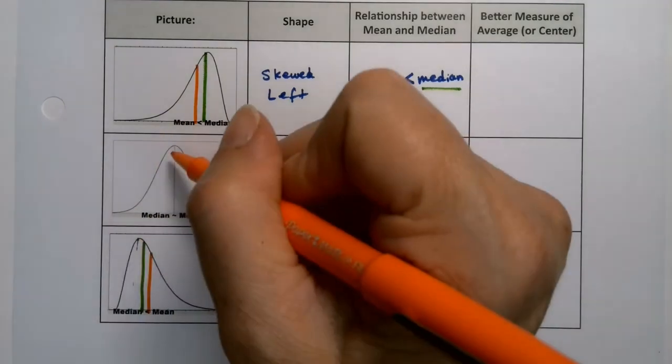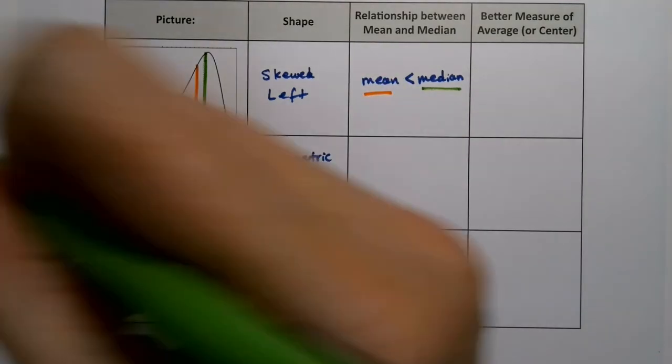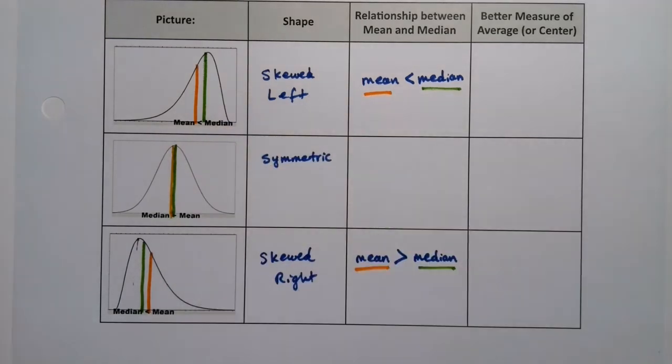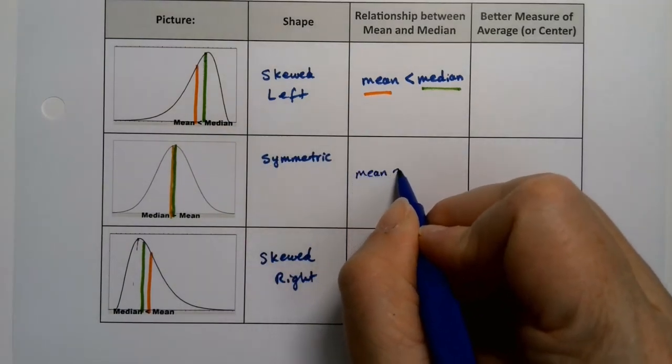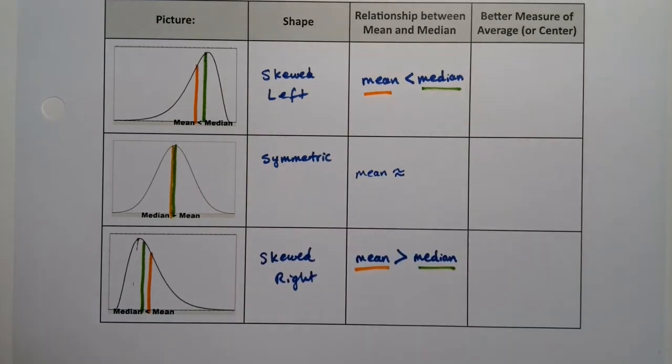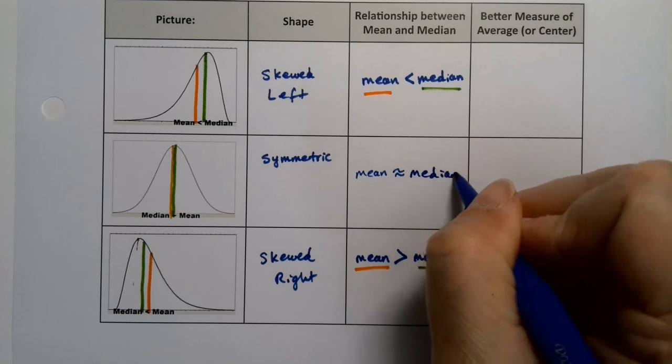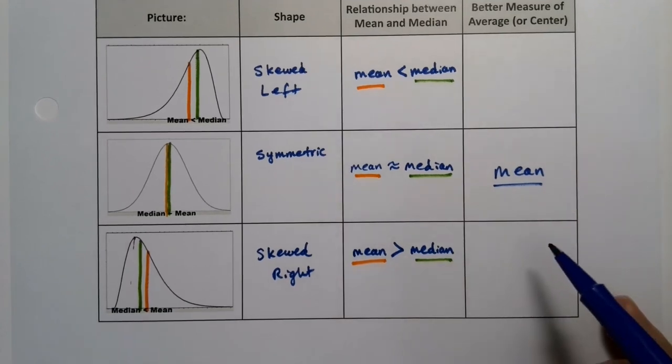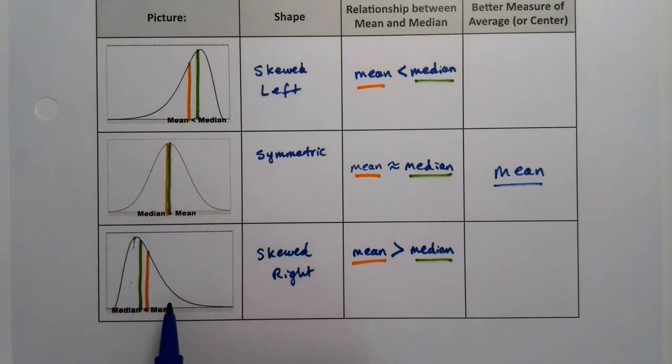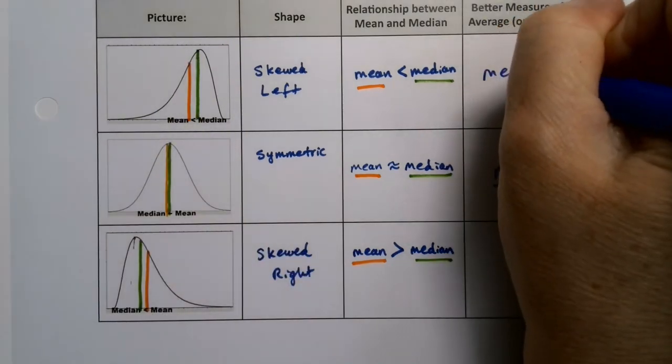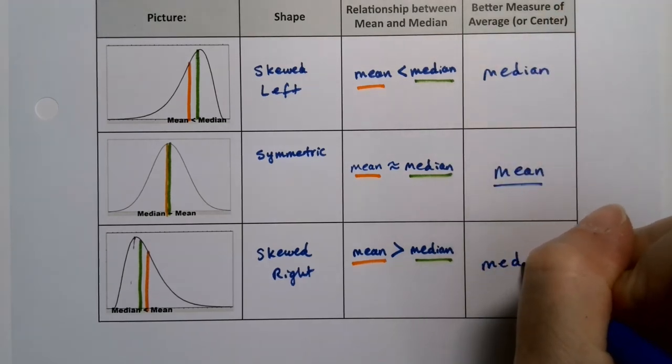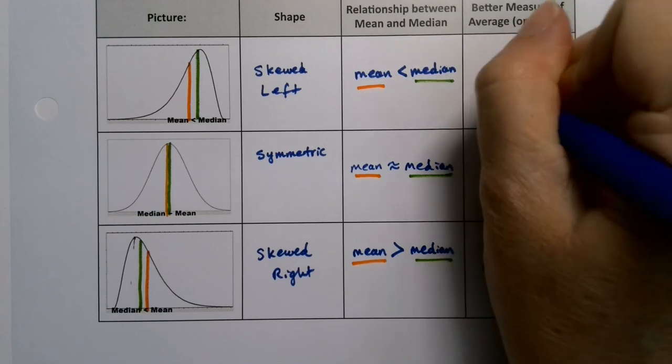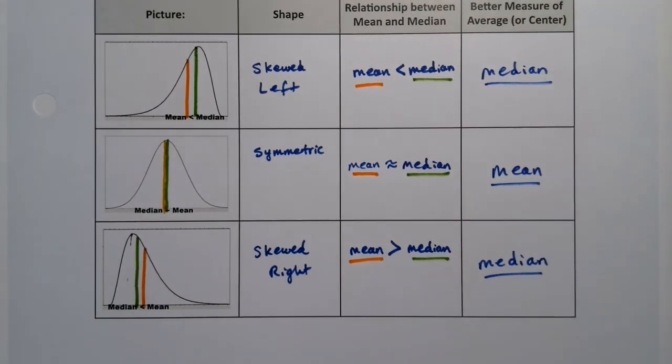So what about when they're symmetric? Well, then they're basically the same. They're at the same spot. So the mean, they're not entirely exactly equal, they're just mostly equal. Now, if they're mostly equal, then your better measure of center is the mean, the one that you know and love. But if it's skewed, what we just said in important point number two is that the median is a fairer representation of the center of a data set.